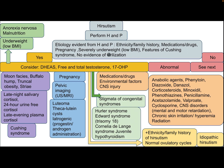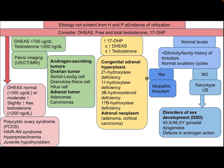If lab tests are abnormal or evidence cannot be found in the history, consider DHEA, free and total testosterone, and 17-hydroxyprogesterone. If DHEA is normal or moderately elevated (less than 350) or slightly elevated, with free testosterone less than 200, the differential diagnosis includes polycystic ovarian syndrome, HAIR-AN syndrome, and hyperprolactinemia.